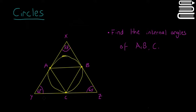That makes these lines tangents to the circle, and there's another triangle formed from those tangent points — triangle A, B, C. We also have the angles 58 degrees, 62 degrees, and 60 degrees, which are the interior angles X, Y, and Z. The question is to find the internal angles of A, B, and C.